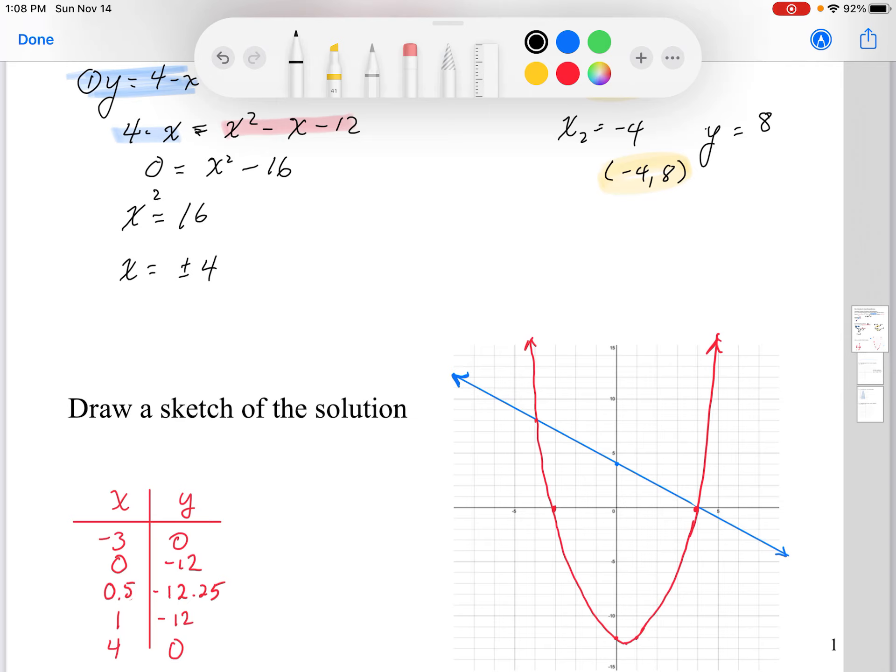Starting with y equals x squared minus x minus 12, I'm going to first factor it. I get (x minus 4)(x plus 3), and that's going to give me my zeros which are going to give me symmetrical points. The zeros are at x equals 4 and x equals negative 3. And I can see that as I sketch an upward parabola, I'm going to get my two solutions. The solution to the system is at negative 4, positive 8 and 4, 0.